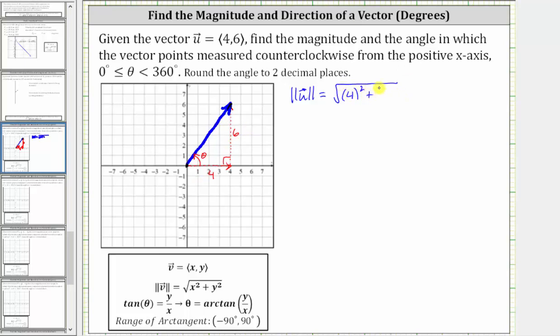four squared plus six squared, which equals the square root of 16 plus 36. We have the magnitude of vector u equals the square root of 52.